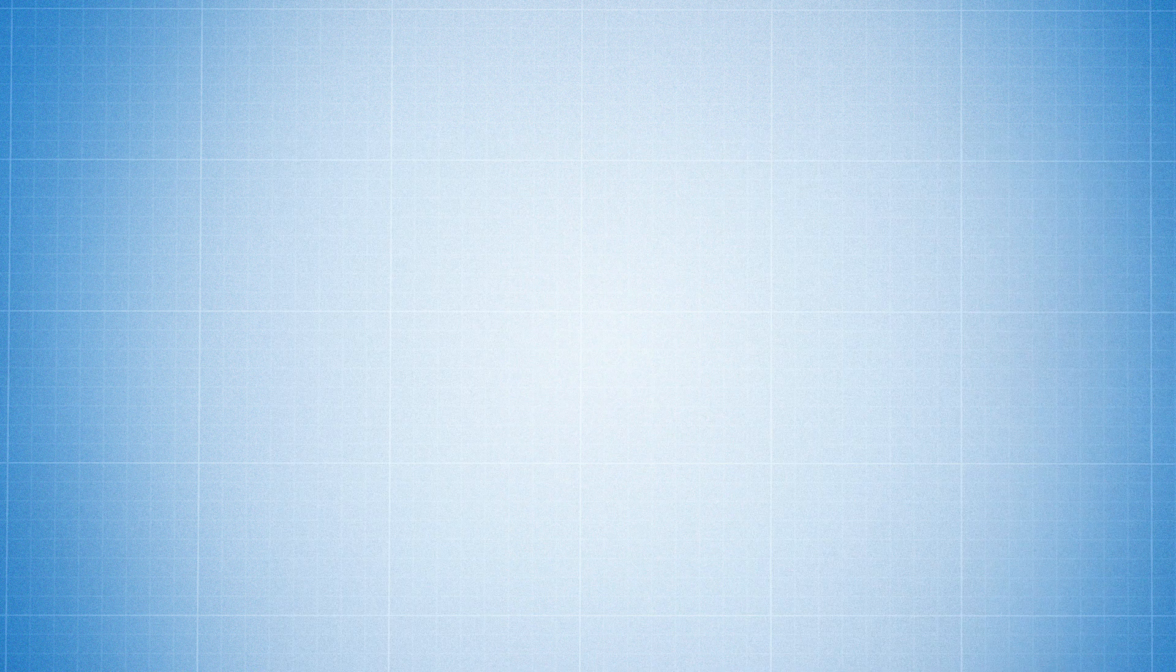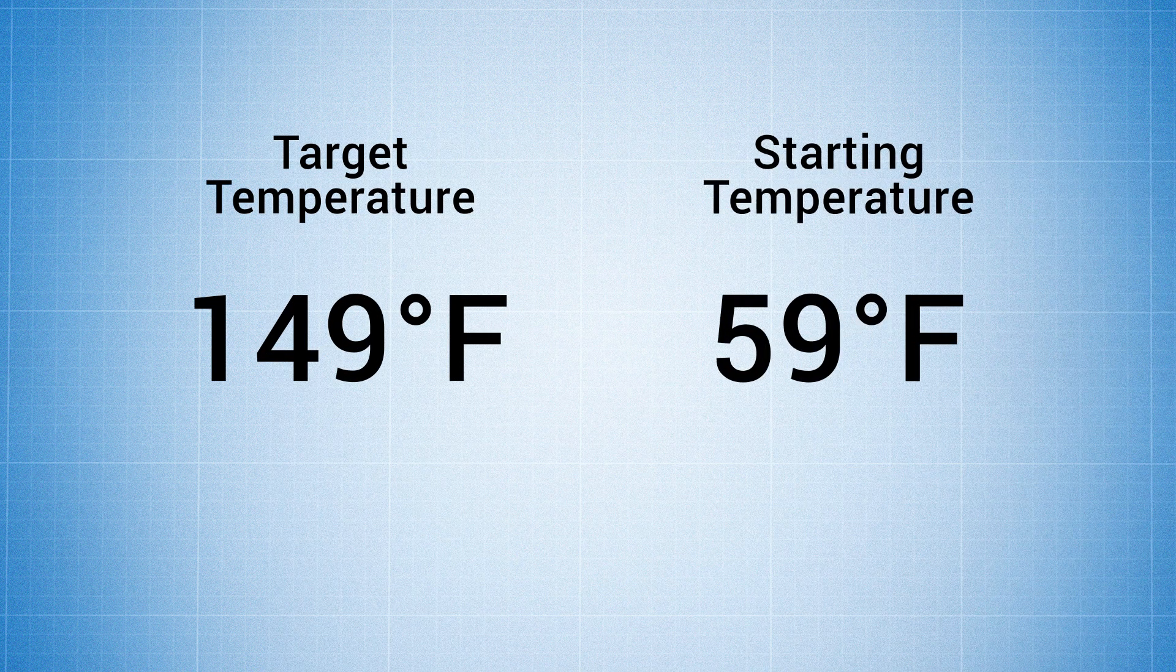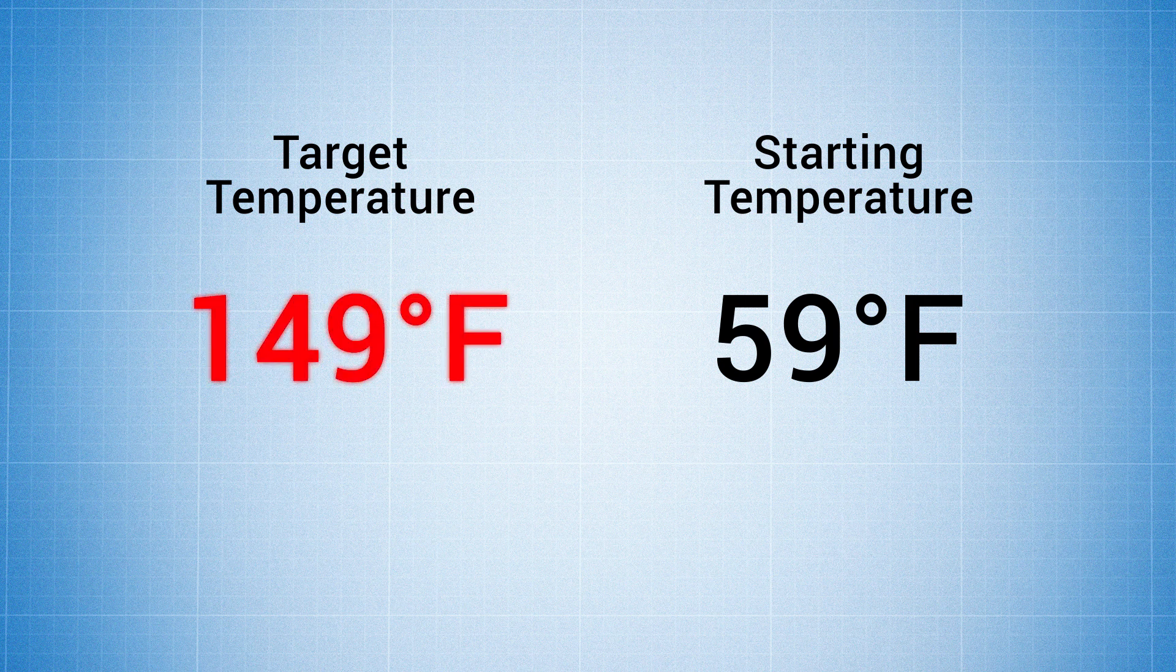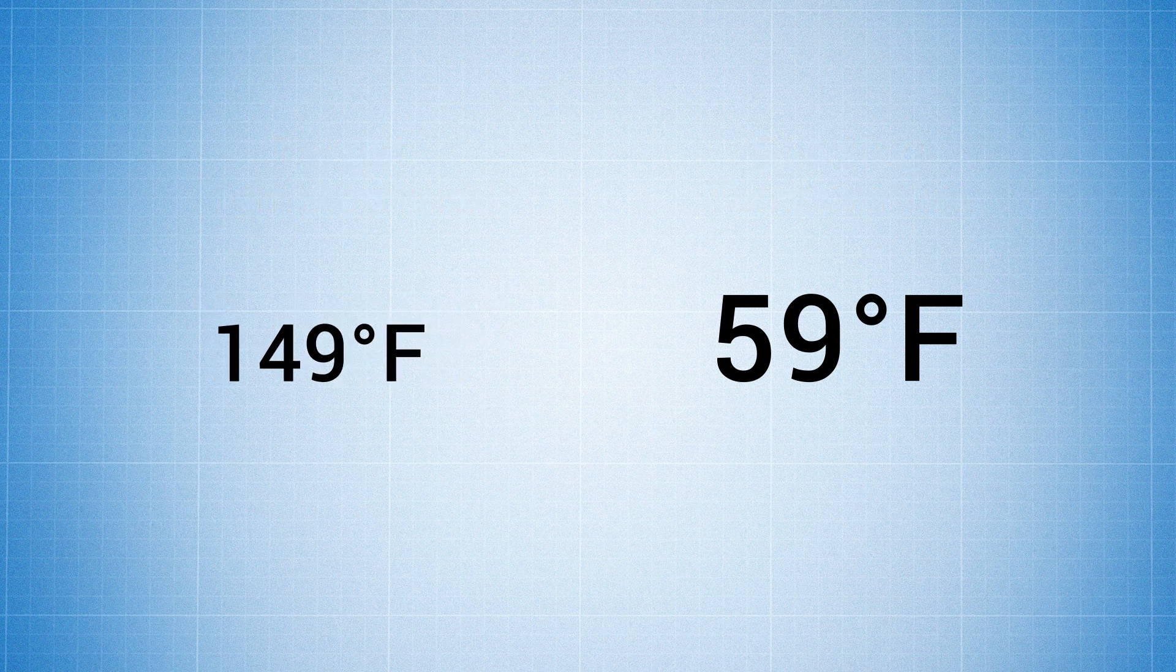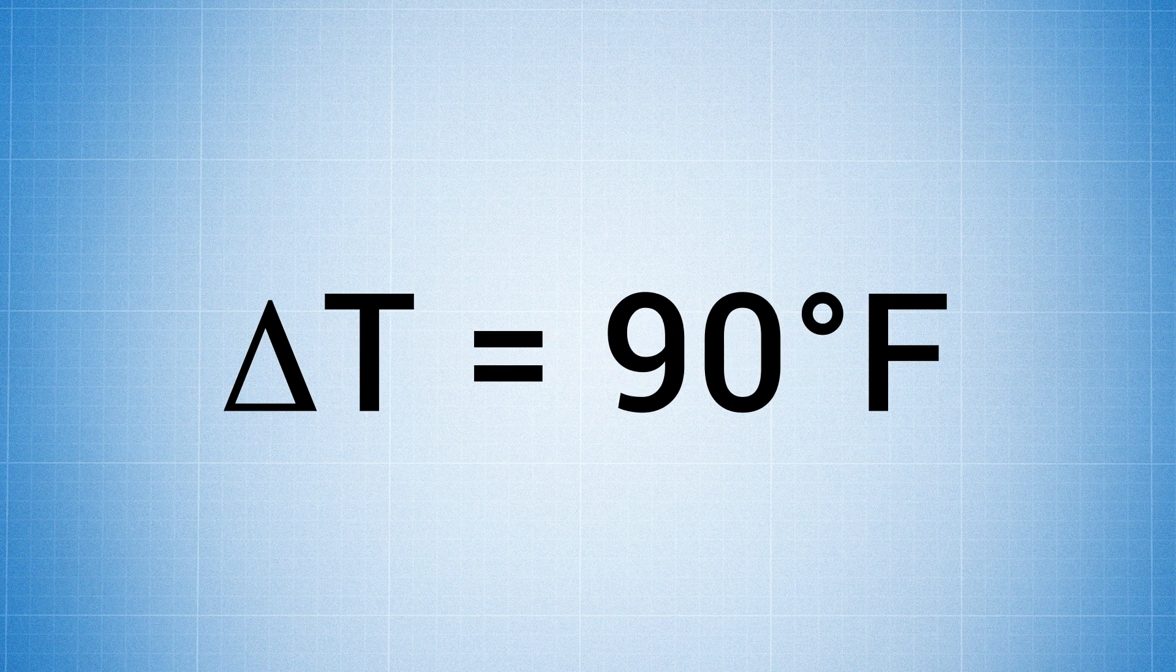Then we need to calculate the difference between our target temperature and our starting temperature. For this example, we'll use 149 degrees Fahrenheit, since this is the max temperature for most solar cells. Which if we do the math, 149 degrees Fahrenheit subtracted by 59 degrees Fahrenheit will give you a delta temperature of 90 degrees Fahrenheit.